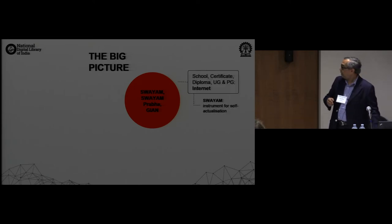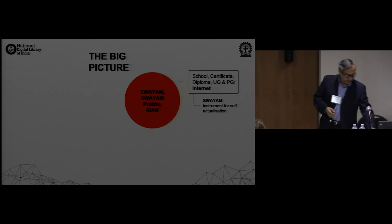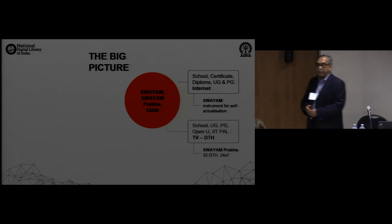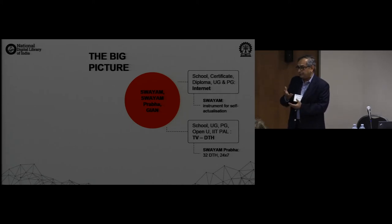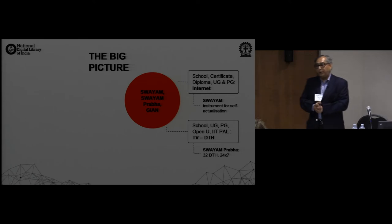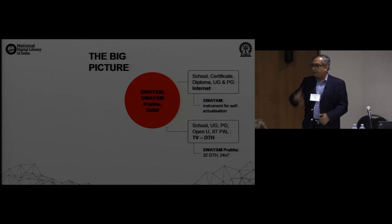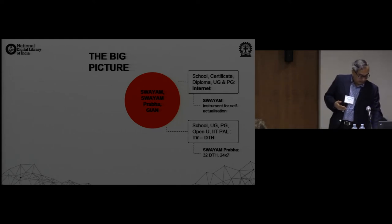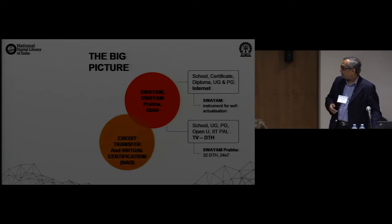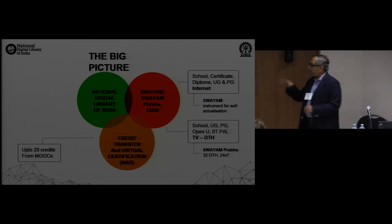SWAYAM Prabha is a collection of 32 TV channels which run on direct-to-home satellite dishes, which are very inexpensive — a 1,500 rupee dish. You can see 32 channels, 24 by 7, where different levels of educational programs are conducted on a regular basis. Credit transfers are already available.